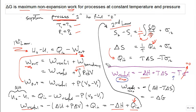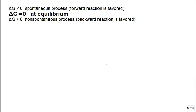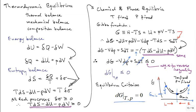Then we get what we set out to show: the maximum useful work for non-expansion work for a process at constant temperature and constant pressure is the change in the Gibbs free energy. At equilibrium, ΔG = 0. The textbook shows a longer derivation that demonstrates the equilibrium criterion: ΔG = 0 at constant temperature and constant pressure.